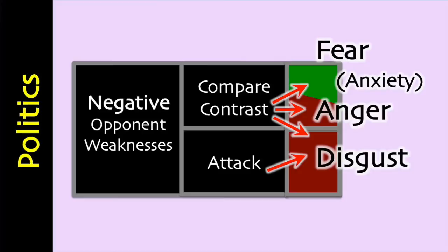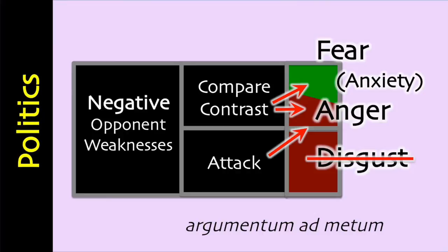Fear, uncertainty and doubt morph into fear, anger and disgust in politics. Fear and anger are two of the most powerful emotions and motivators. The emotion of disgust is one of the easiest to elicit, but when related to politics, because it is values-based, it is very subjective and one of the most dangerous to try to elicit. Not all negative ads are bad. They are tools, and what makes them good or bad is how you use them.